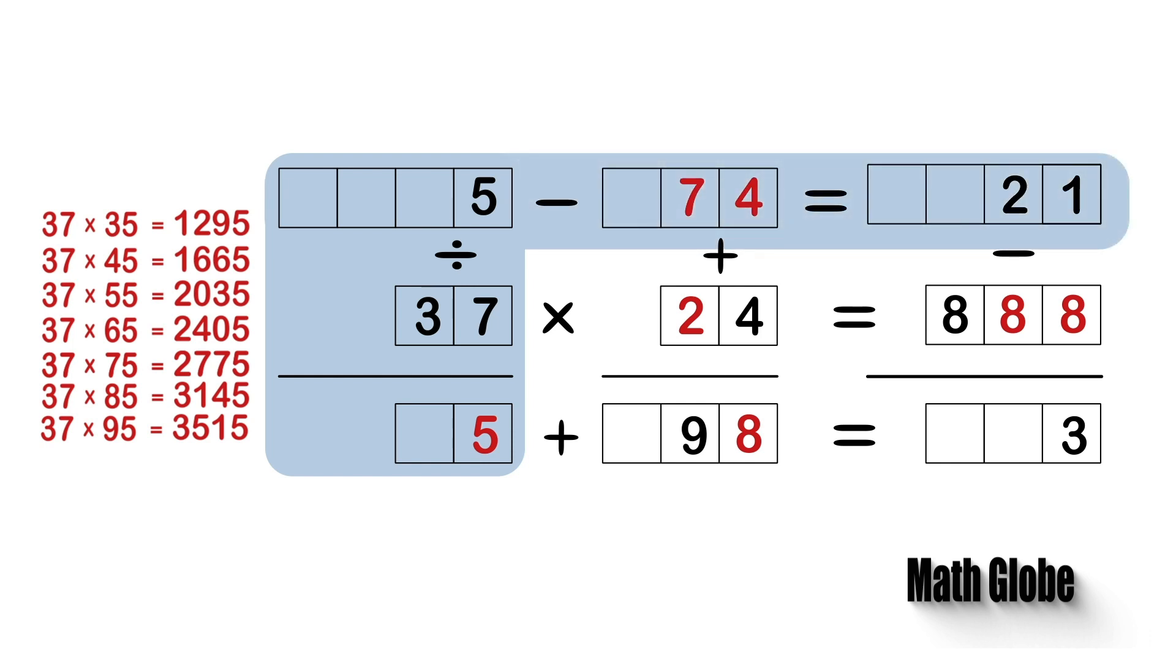Among these, only 1295 fits in the equation here. So let's fix this number here and go ahead and write the quotient which is 35.